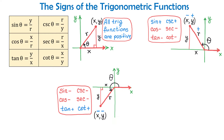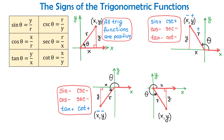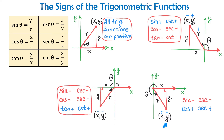Now let's draw an angle in quadrant 4. Here we have angle theta, and in quadrant 4, x is positive and y is negative. I will write a plus over x and a minus over y to remind us that x is positive and y is negative. Then sine of theta is y over r, and negative divided by positive is negative, so both sine and cosecant are negative. Cosine of angle theta is x over r, and positive divided by positive is positive, so both cosine and secant are positive. Tangent of angle theta is y divided by x, and negative divided by positive is negative, so both tangent and cotangent are negative.